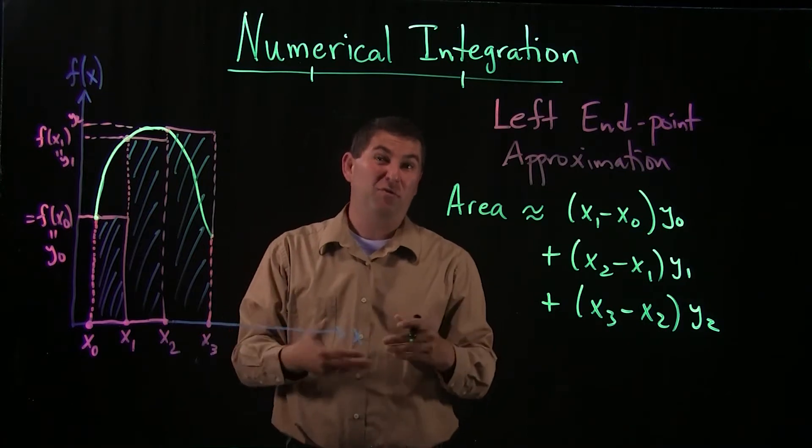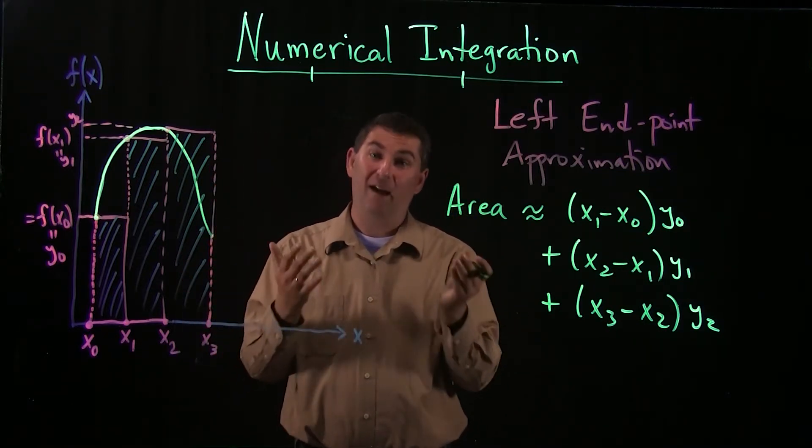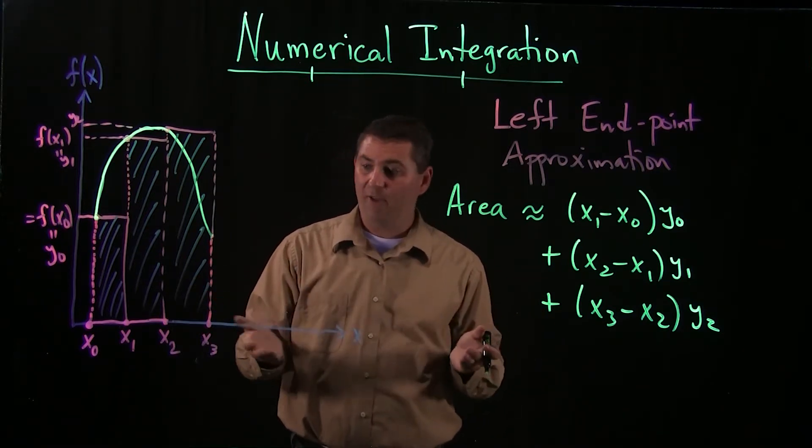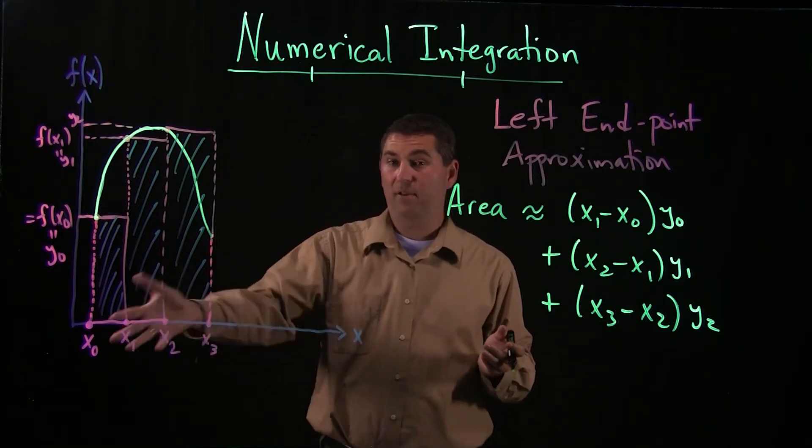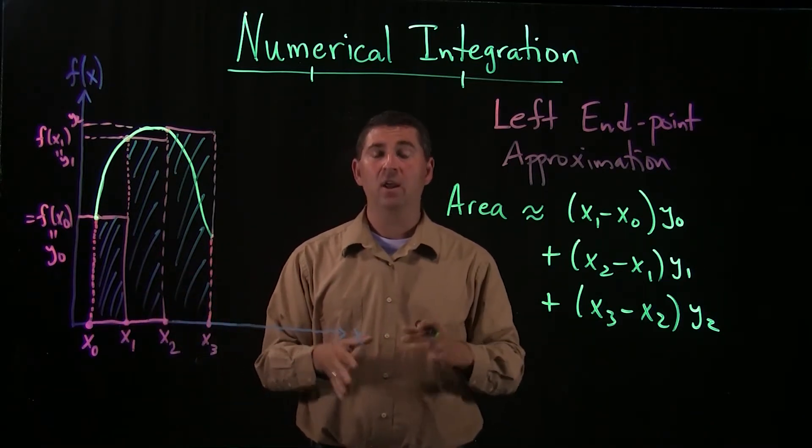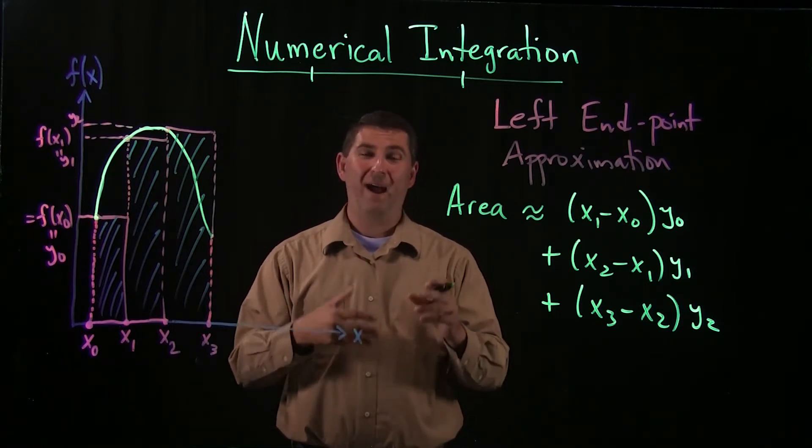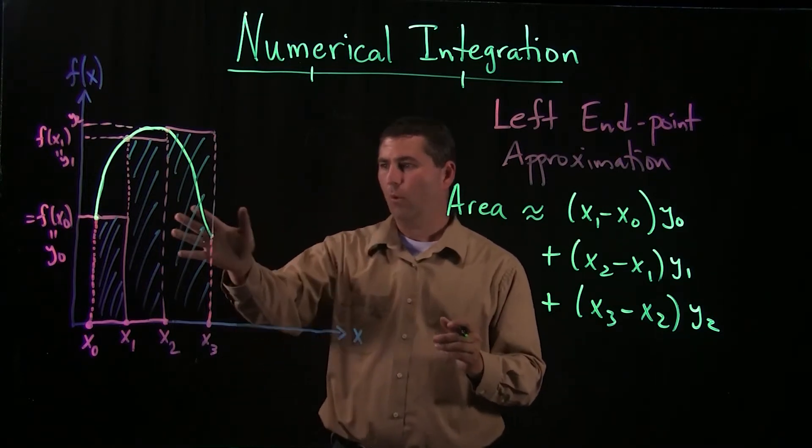So why not just use more and more of them? Of course, you could go to infinity and then you have the Riemann integral. In practice, though, we don't have an infinite number of data points usually. We have some finite number. That's going to limit how close we can get our approximation. And we'll talk in a later video of how we can decide how close our approximation really is.